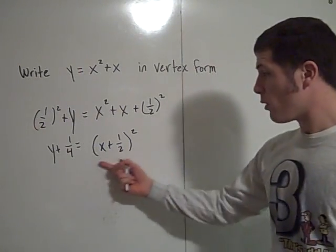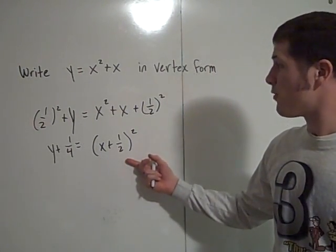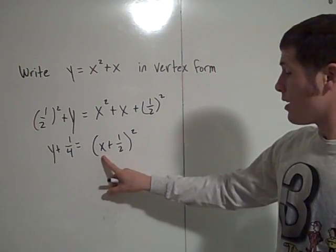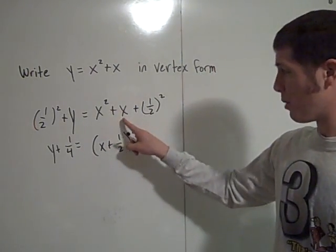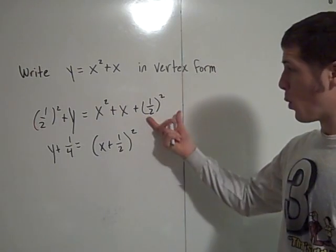Now, you can multiply this out and test that, but I'm certain you'll find that x plus 1 half squared is x squared plus x plus 1 fourth.